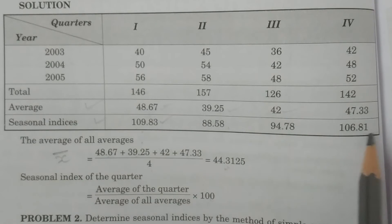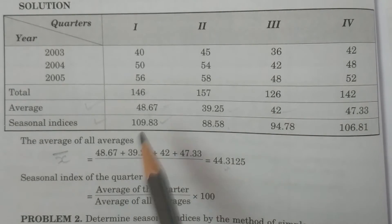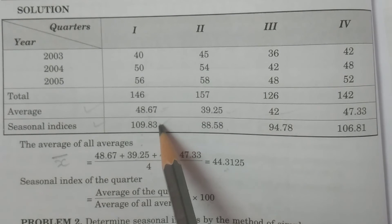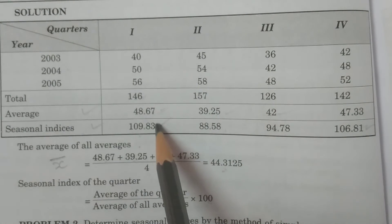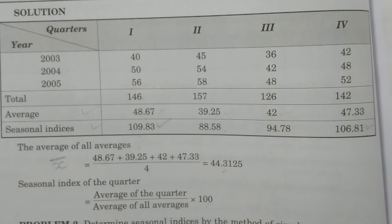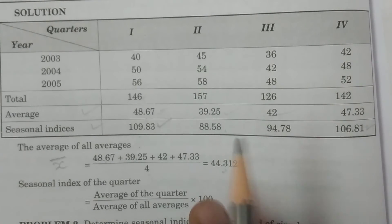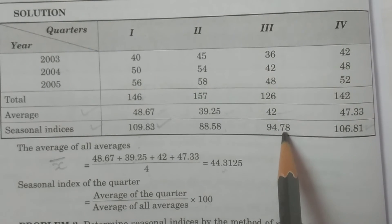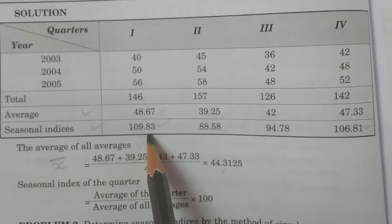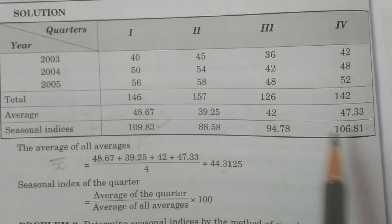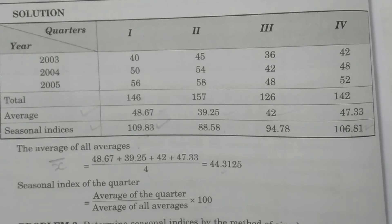Observing the seasonal indices, the first quarter and fourth quarter have higher indices (109.83 and 106.81), indicating more sales. The second quarter is very low (88) and the third quarter is moderate (94). Therefore, the business should concentrate on Quarter 1 and Quarter 4 — that is our conclusion.